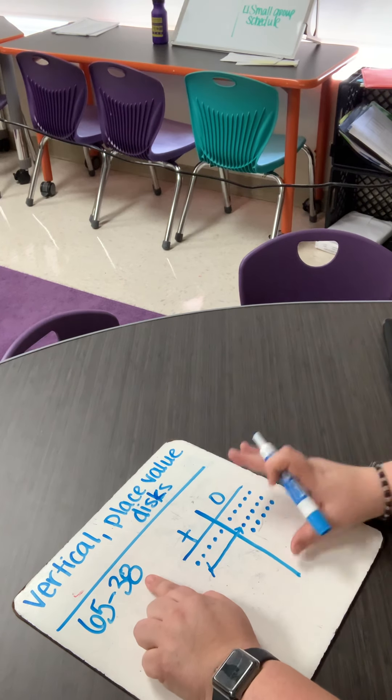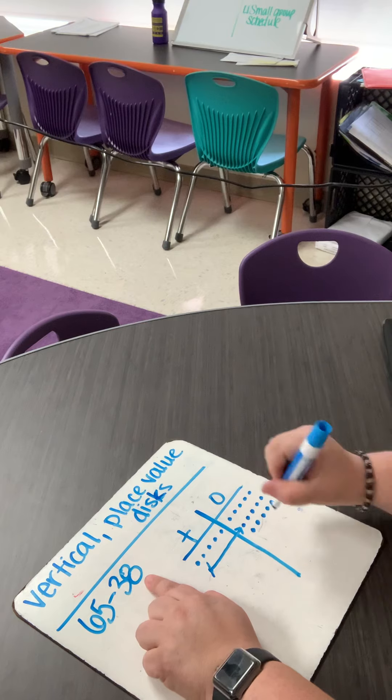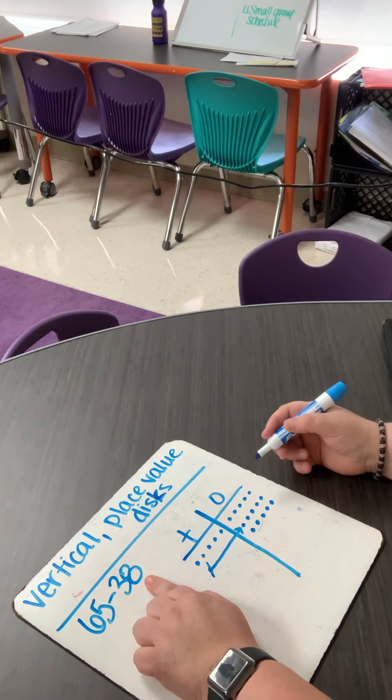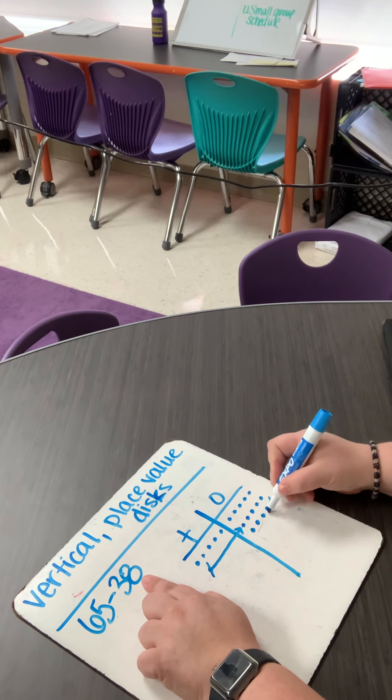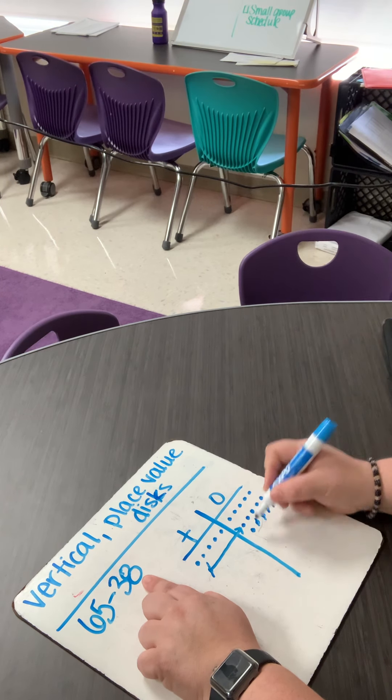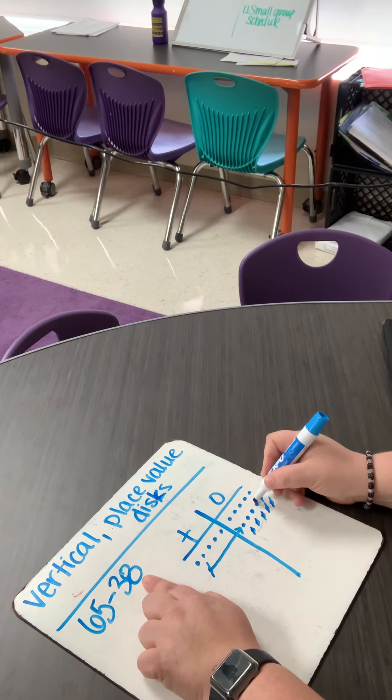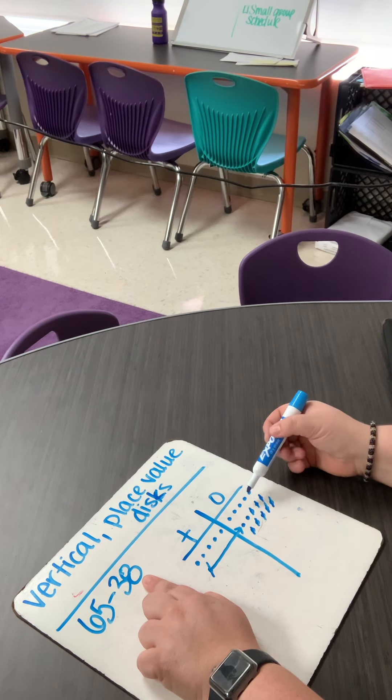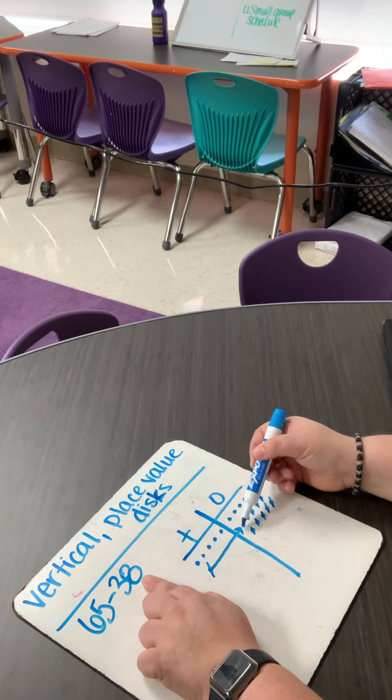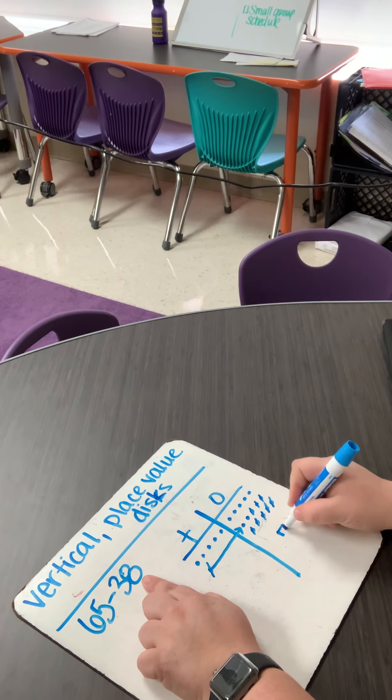So I know on my dry erase board, I don't want to erase them because I want to be able to check my work later. So I'm going to just mark through them. One, two, three, four, five, six, seven, eight. Let's see how many I have left. One, two, three, four, five, six, seven. I have seven ones left.